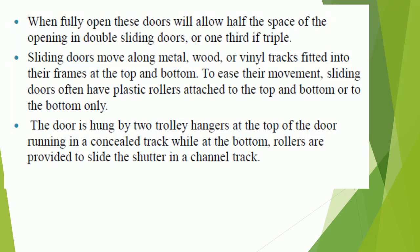Sliding doors move along metal, wood, or vinyl tracks fitted into their frames at the top and bottom. To ease their movement, sliding doors often have plastic rollers attached to the top and bottom or to the bottom only. The door is hung by two trolley hangers at the top running in a concealed track, while at the bottom, rollers are provided to slide the shutter in a channel track.